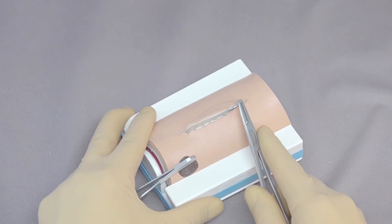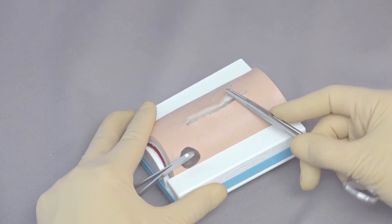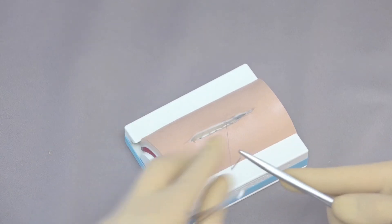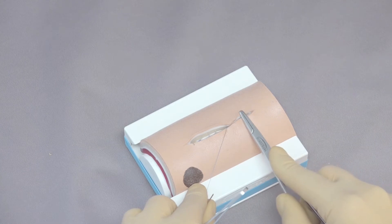So in this case, I've got a little shorter bite. And I think that's going to help me to do a better job opposing the skin in this case. So here we go. Take a shorter bite there and look at how much better that apposition is compared to that one.